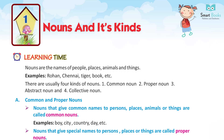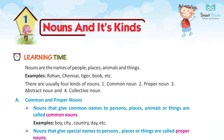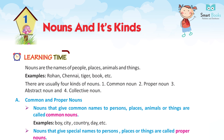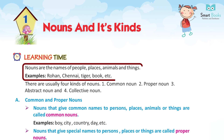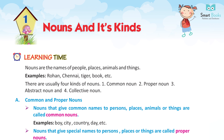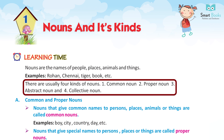Chapter 1: Nouns and Its Kinds. Learning time — nouns are the names of people, places, animals and things. Examples: Rohan, Chennai, tiger, bug, etc. There are usually four kinds of nouns: one, common noun; two, proper noun; three, abstract noun;